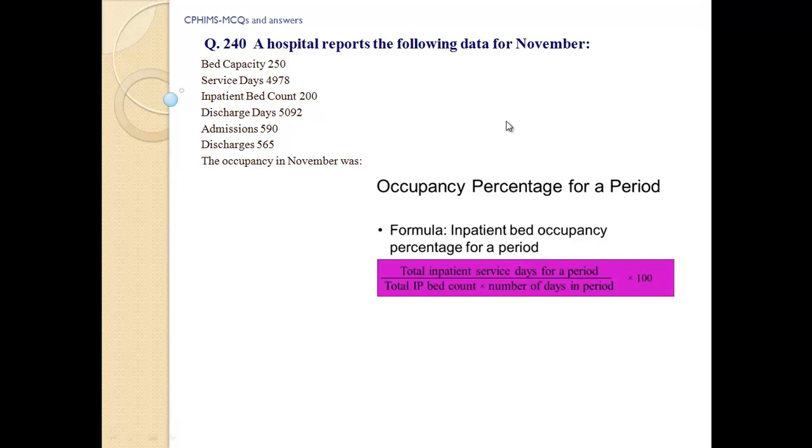This is the formula to calculate occupancy percentage for a period: Formula equals inpatient bed occupancy percentage for a period equals total inpatient service days for a period divided by bed count times days in period times 100. We will apply this formula and the answer will be c, that is 68.0 percent. So the correct answer is c.